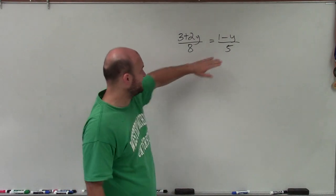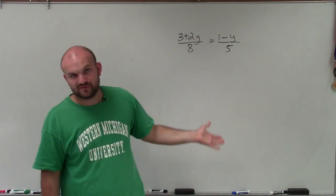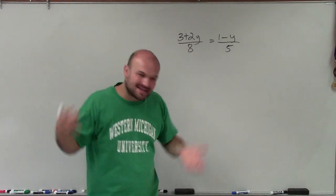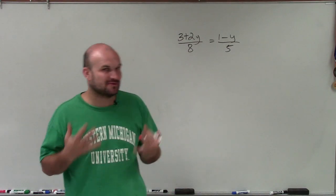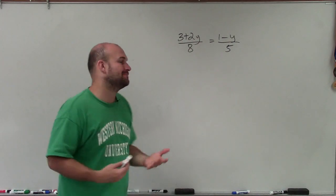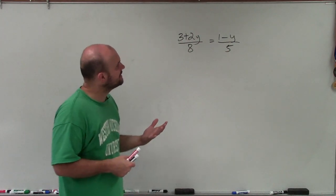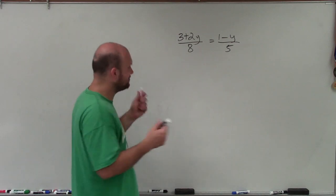We could multiply by the LCD on both sides, which in this case would be 40, which would be the same operation as cross multiplying that I know a lot of students prefer to do, which I really kind of cringe at because it takes away the actual understanding of what you're doing. But anyways,